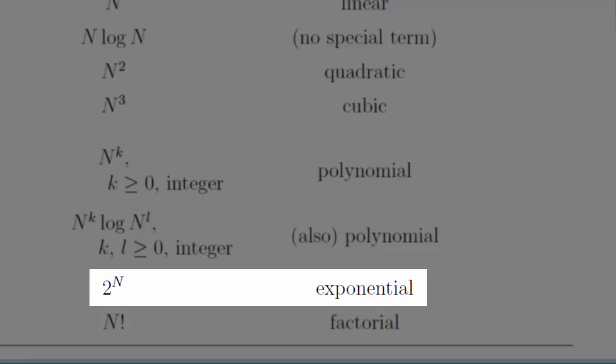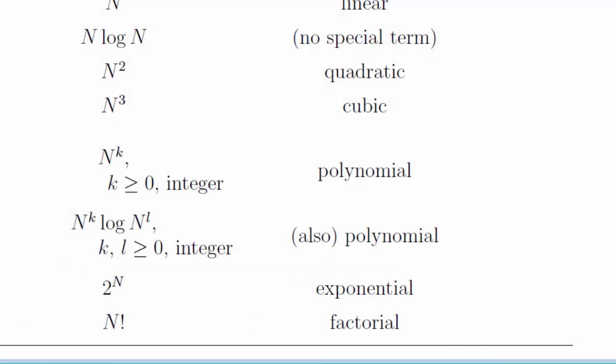The main two categories in quantum computing are exponential and polynomial, which is essentially everything else. Our goal is to solve a problem whose classical algorithm seems to always be exponential, that's called a hard problem, and to do so with a quantum algorithm that's polynomial.